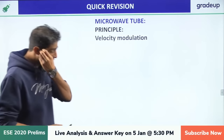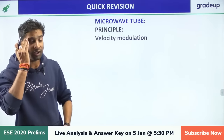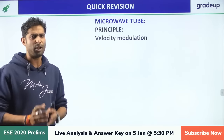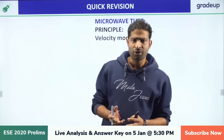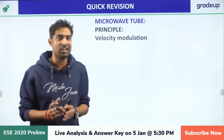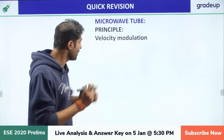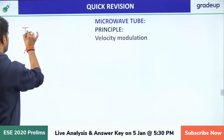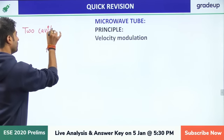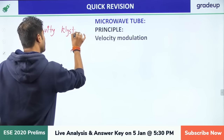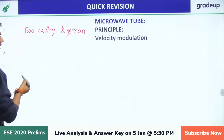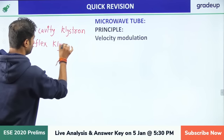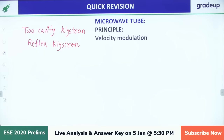For microwave, I have analyzed the previous year ISRO exam papers and selected the most important topics. In this session we are going to discuss: two-cavity klystron, reflex klystron, and TWT — travelling wave tube.